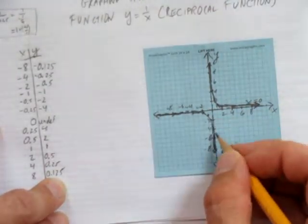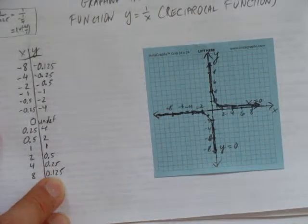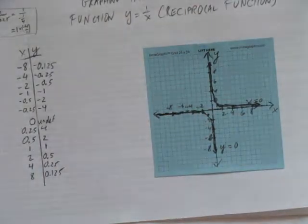And so, this characteristic shape is, in fact, the graph of the parent function, y equals 1 over x, or the reciprocal function.